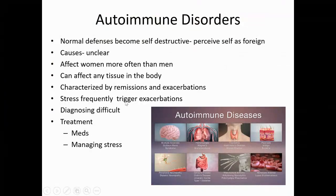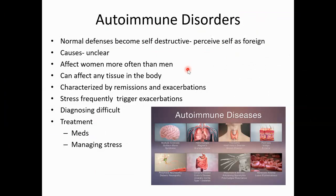So normal defenses become self-destructive — the immune system perceives self as foreign. It perceives somebody's own tissue as something foreign that the antibody should start fighting against. Some of the causes are not really understood. They tend to affect women more often than men, especially younger women, and can affect any tissue in the body.